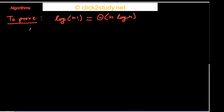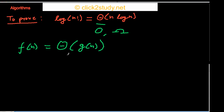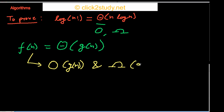Let's do a quick revision of Theta, O, and Omega notation. When do we say that f(n) is in Θ(g(n))? We say this when we can prove two things: that f(n) is in O(g(n)) as well as Ω(g(n)). When we can prove both of these things, we can prove that f(n) is in Θ(g(n)), because it gives the upper limit and the lower limit.